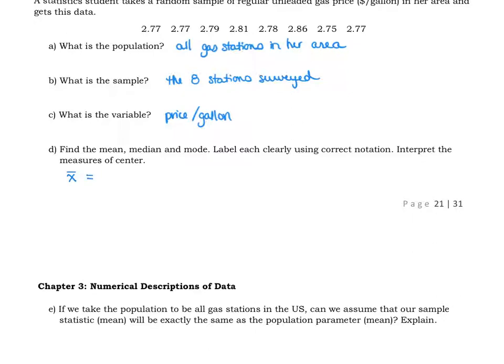When you add up those eight values and divide by eight and round one place past where the data is, so we're going to round to three decimal places, you should find out that the mean is $2.788 per gallon.